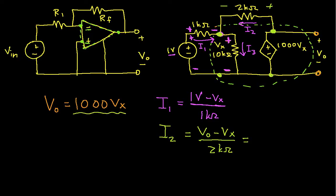I can write this as 1000 Vx minus Vx over 2k ohms. So far so good, hopefully.